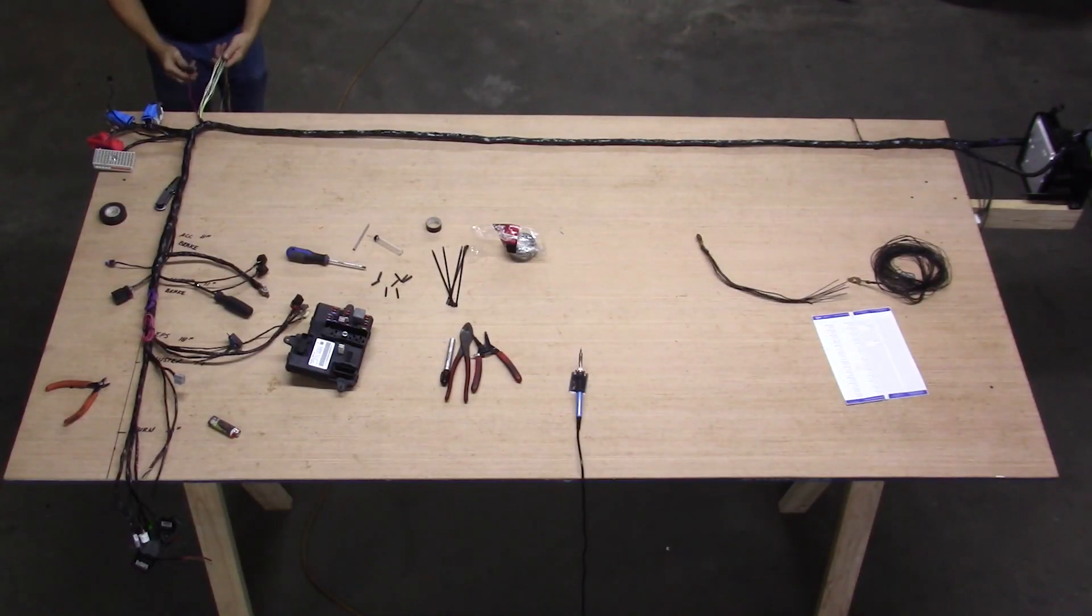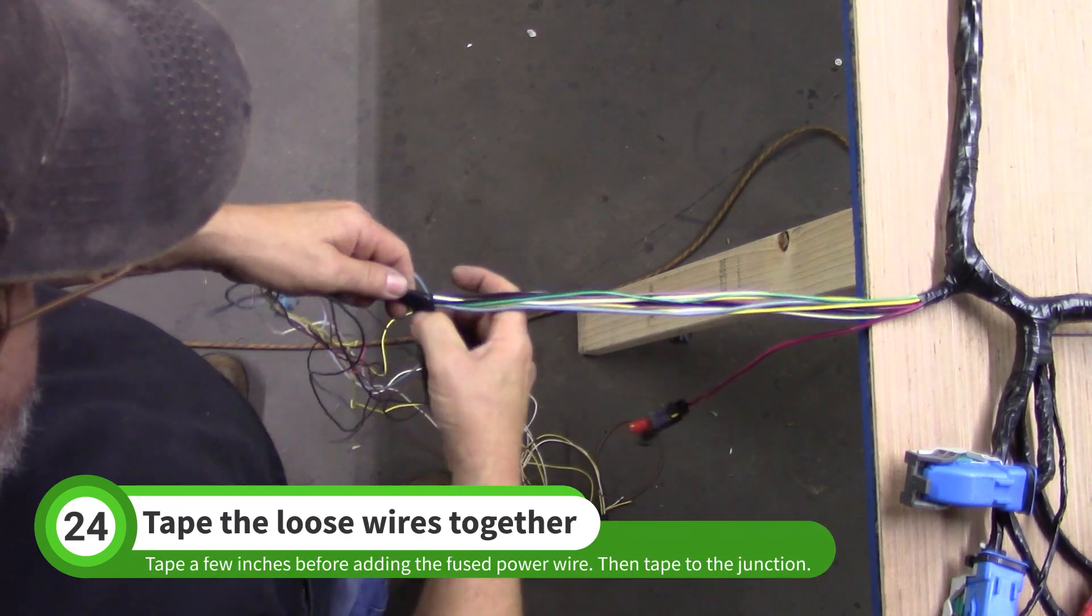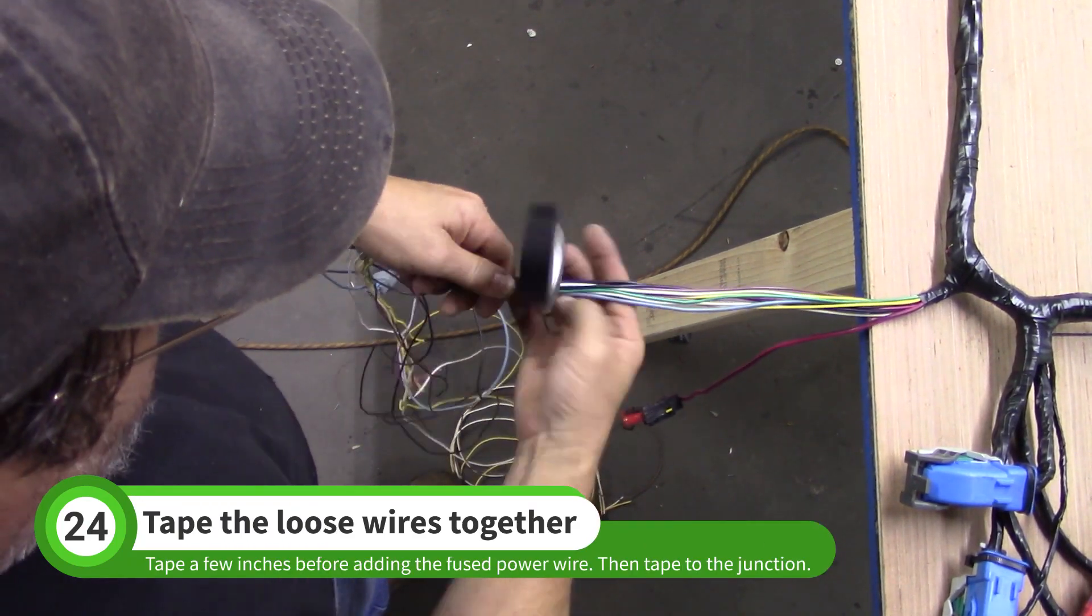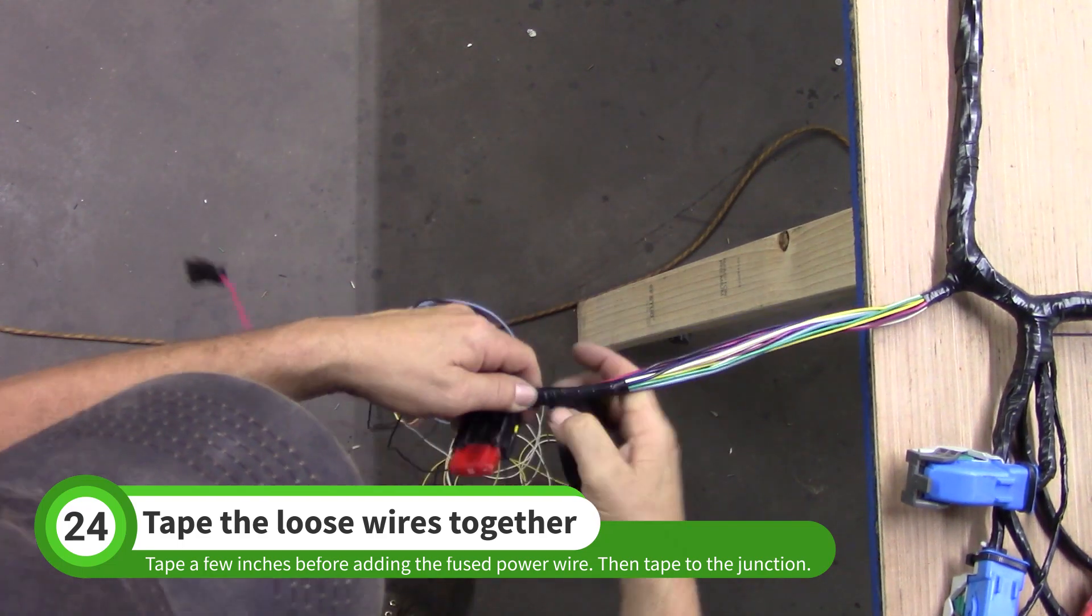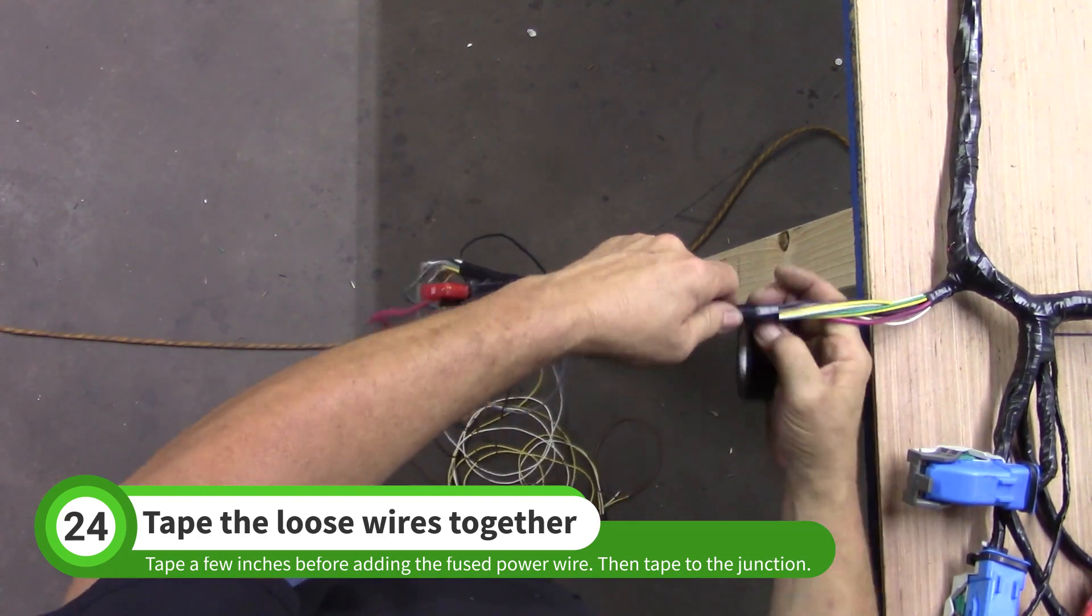Pull out the loose wires and start taping them about two feet from the main junction. Tape up several inches until you get past the 50 amp fuse. Once you get past that point, add the fused wire and continue taping all the way to the junction.